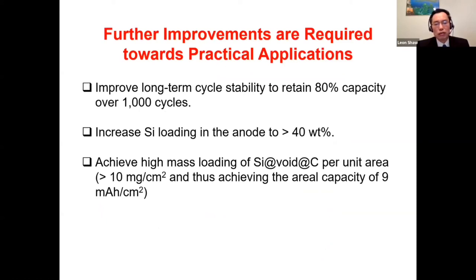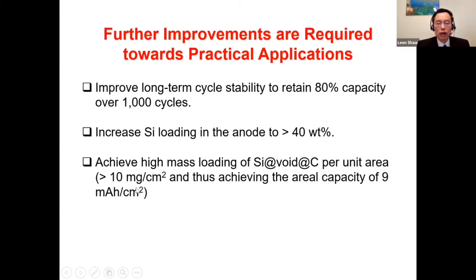We also need to increase silicon loading in the anode to 40% — currently at 30%, which is already very high. Third, we need to achieve high mass loading of active material per unit area: increasing from 1 mg per centimeter squared to 10 mg per centimeter squared would yield an areal capacity of 9 mAh per centimeter squared — about 100% higher than graphite anode — which would be a major breakthrough for lithium-ion batteries.